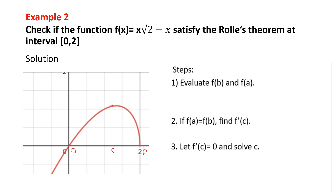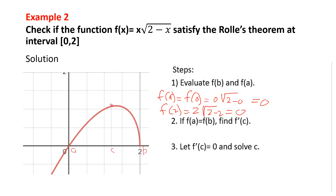Now consider f(x) = x√(2 - x). Evaluate at the endpoints: f(0) = 0 · √(2 - 0) = 0, and f(2) = 2 · √(2 - 2) = 0. So f(a) equals f(b), satisfying the condition. Now find f'(c) equals 0.